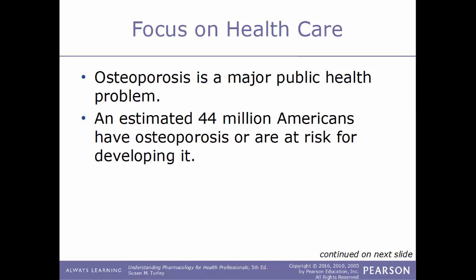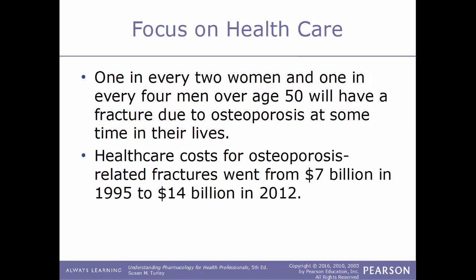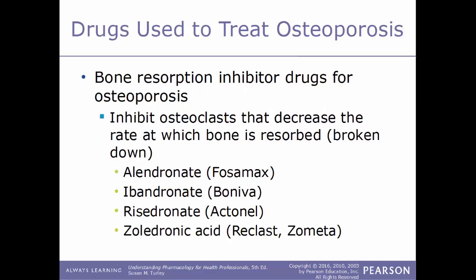Osteoporosis can be prevented or treated with drugs that decrease the rate of bone reabsorption, supplemental estradiol and progesterone, supplemental calcium and vitamin D, and increased exercise. Focus on healthcare: osteoporosis is a major public health problem — an estimated 44 million Americans have osteoporosis or are at risk. One in every two women and one in every four men over age 50 will have a fracture due to osteoporosis. Healthcare costs for osteoporosis-related fractures rose from 7 billion dollars in 1995 to 14 billion dollars in 2012.